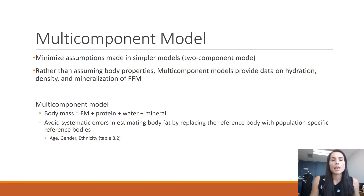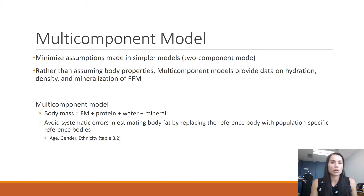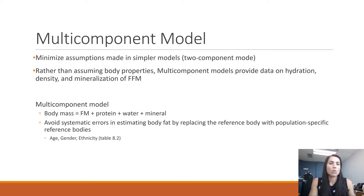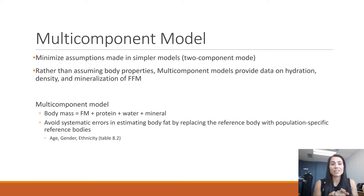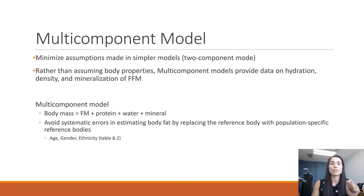The multi-component model is more ideal because it limits the number of assumptions made. Rather than making those assumptions, it actually measures some of these things — providing information on hydration status, actual volume or density, or mineralization of the fat-free body. The multi-component model includes body mass equal to fat mass plus protein, water, and mineral. By doing this, it avoids a lot of errors in estimating someone's body fat percentage and is probably the most ideal approach. Your book has table 8.2, which shows age, gender, and ethnicity references for this.